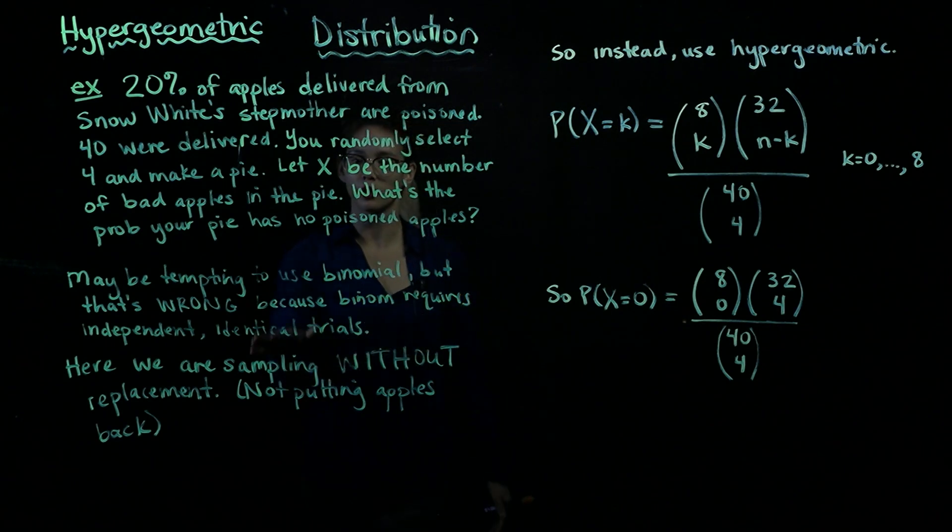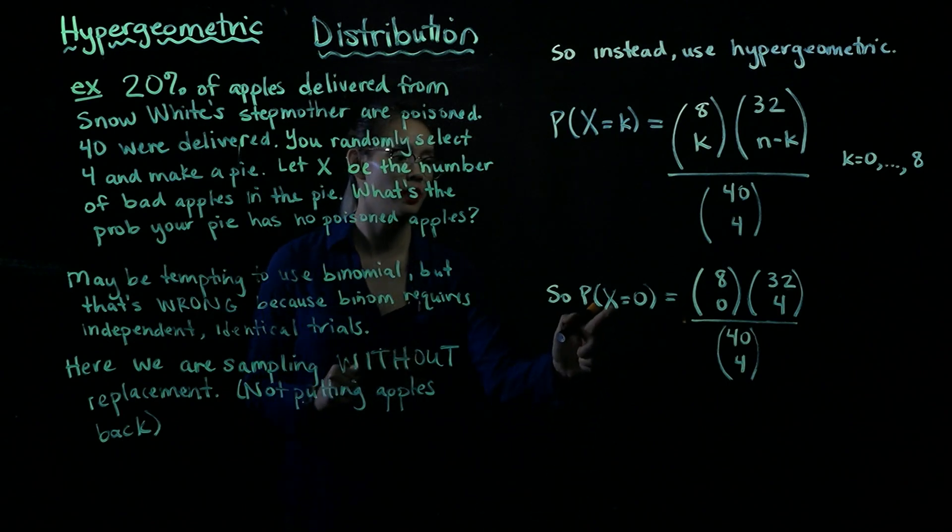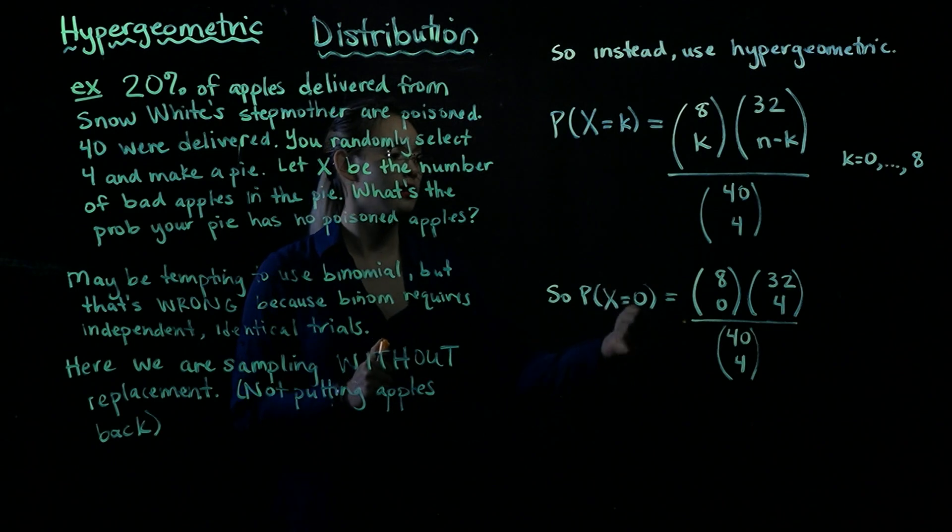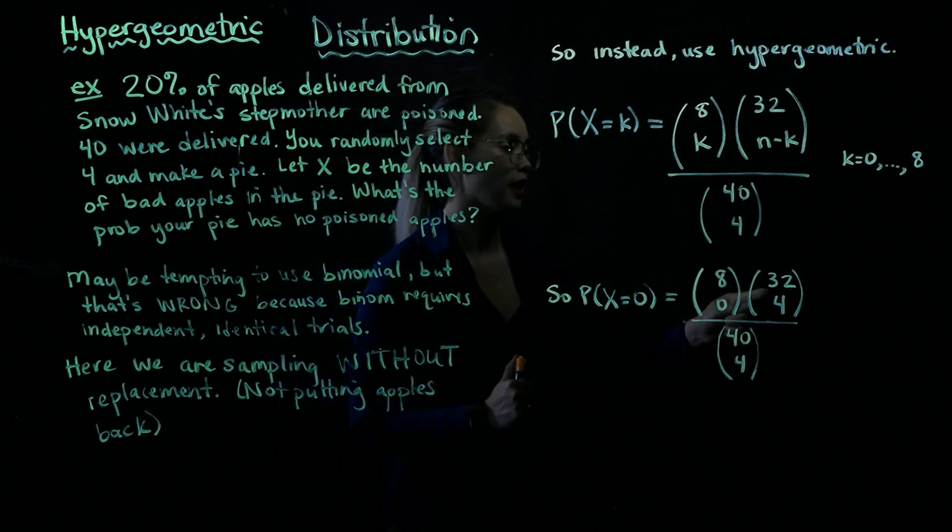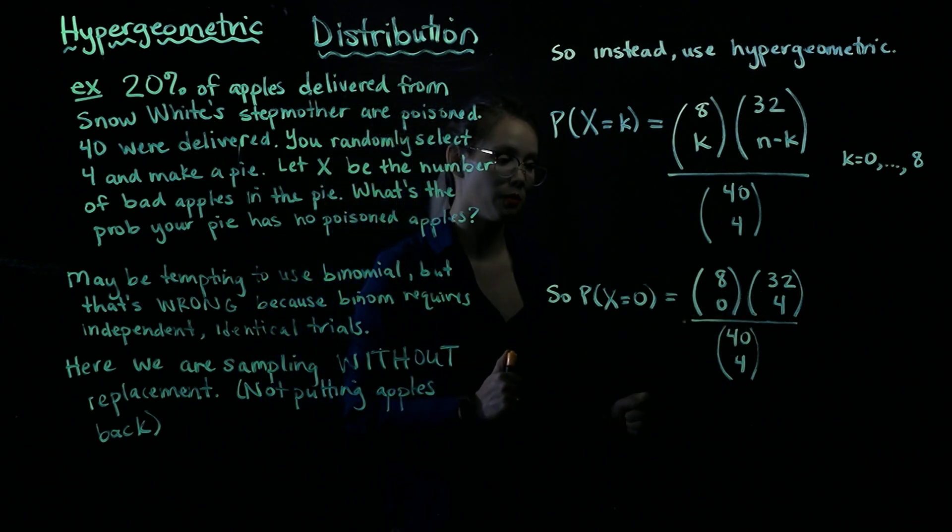But we are wondering what's the probability that we are going to have 0 poisoned apples in our pie. So that means we're looking for the probability X equals 0. So k is 0. So we have 8 poisoned apples, we're choosing 0 of them to be in our pie. We have 32 safe apples, and we're choosing 4 of them to be in our pie.